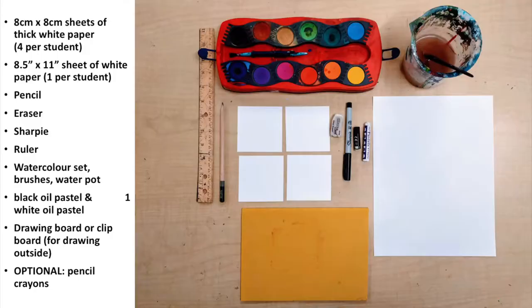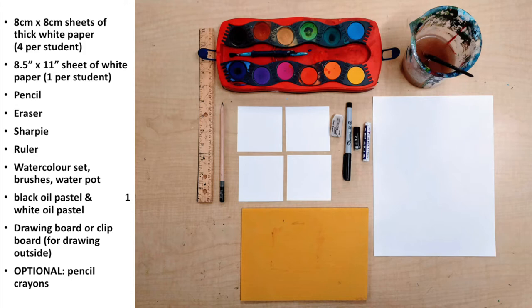You'll need some simple materials for today's activity. Each person will need four square sheets of thicker paper, like cardstock, each square being eight centimeters by eight centimeters. Everyone will need a pencil, an eraser, and a Sharpie, as well as an eight-and-a-half by eleven sheet of white paper. You'll also need a drawing board, clipboard, or hard surface to draw on while walking outside, and a ruler. For colour, I'll be using a watercolour set with a brush and a paint pot, but you could also use pencil crayons. We'll also need white and black oil pastels.